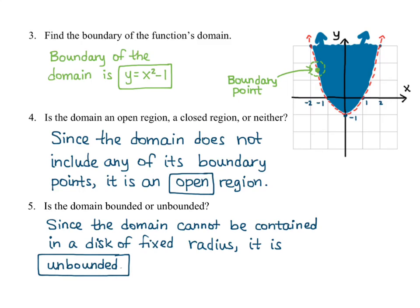Those are your five basic parts to look at. Domain comes from what the input can be, range from what the output of the function is, and you should think back to your basic functions from pre-calculus. The boundary is the edge of your domain. Open or closed has to do with whether you include the boundary in your domain. Bounded or unbounded has to do with whether your domain expands infinitely or not.